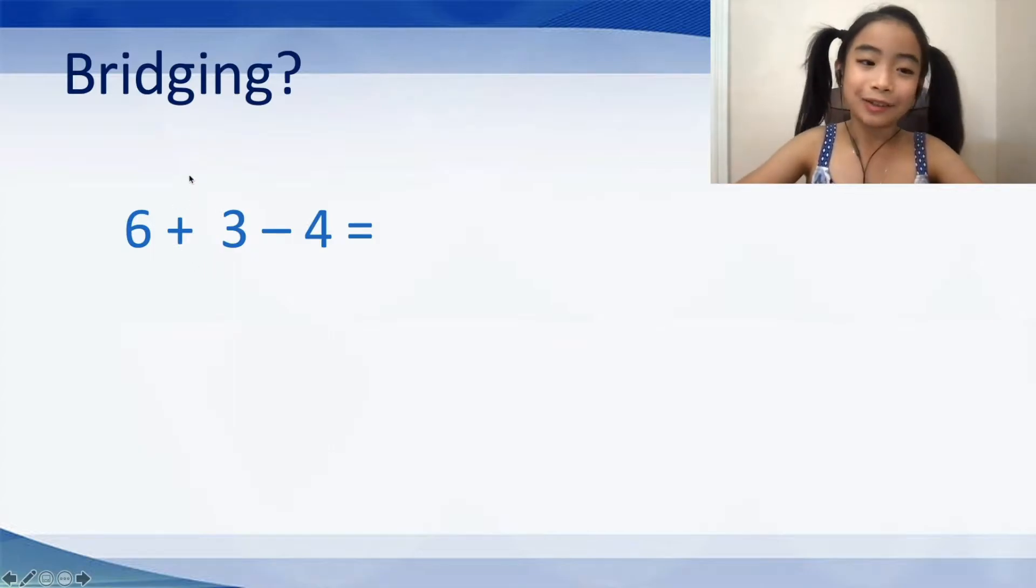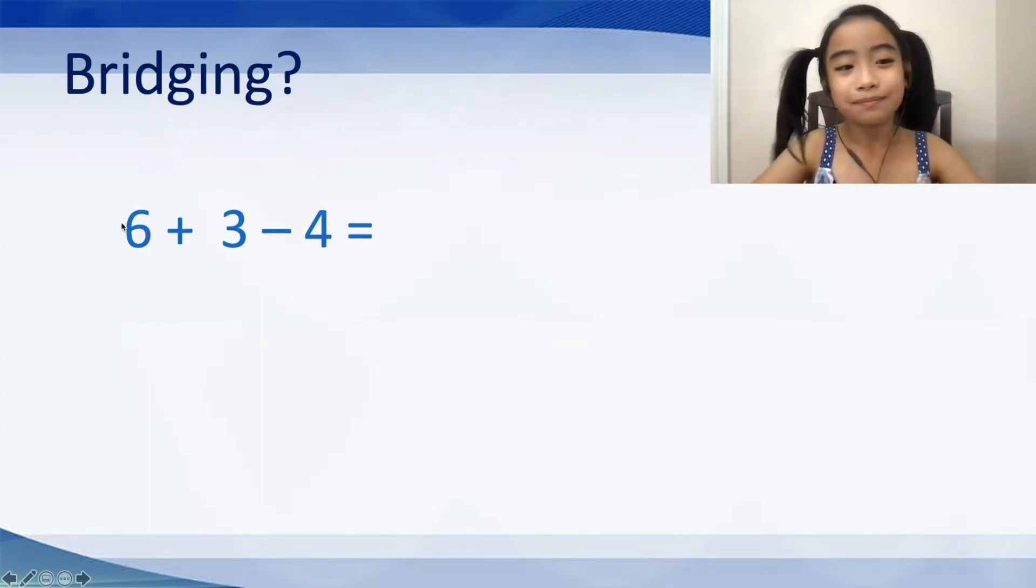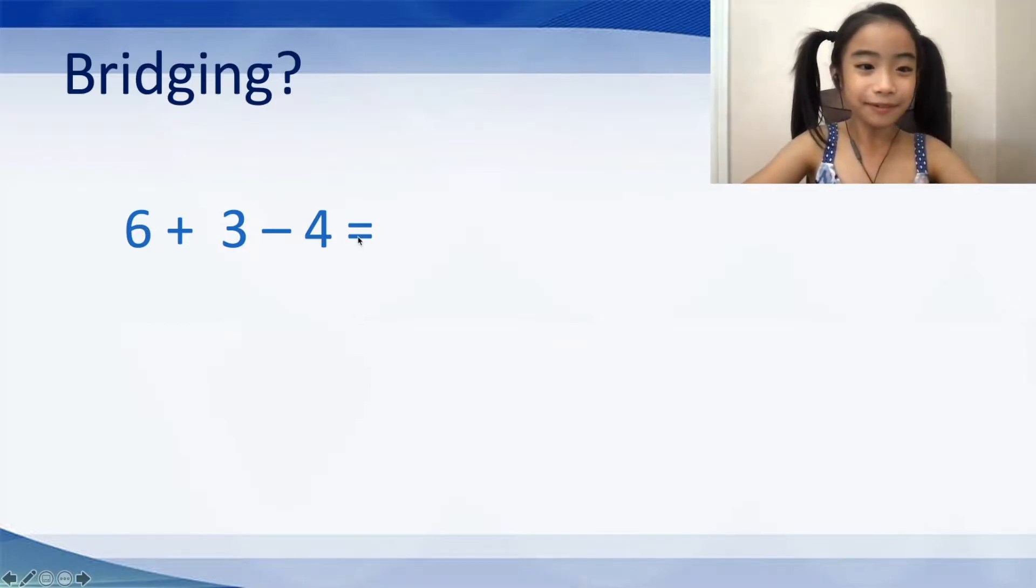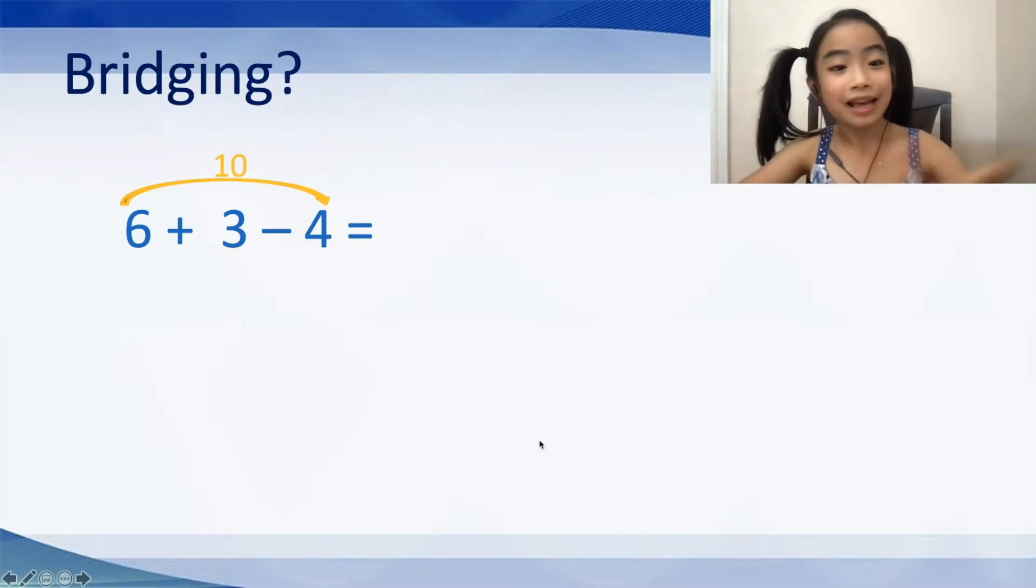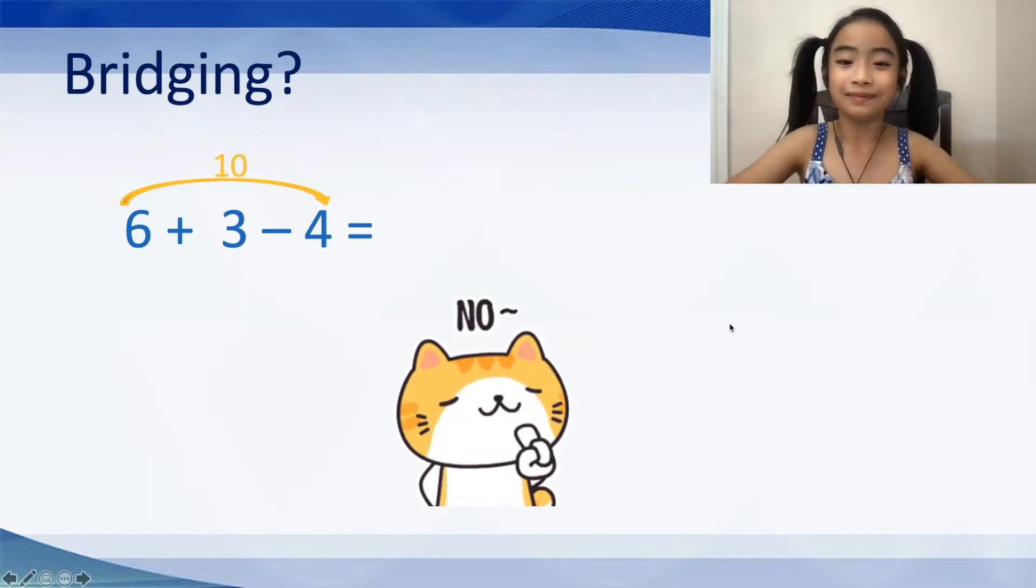So, let me ask you a question. Does bridging work for this equation? Well, let's see. You might say, well, look, we have 6 and 4. They are best friends because 6 plus 4 equals 10. Well, if you say that, you're wrong. That does not count as bridging.